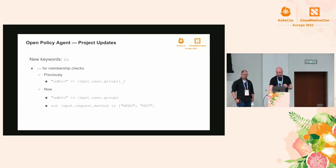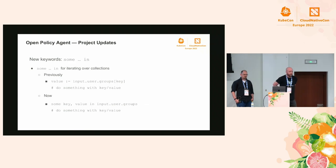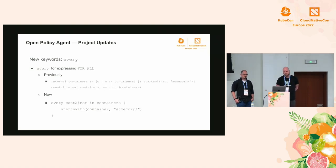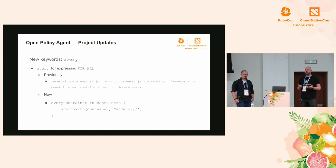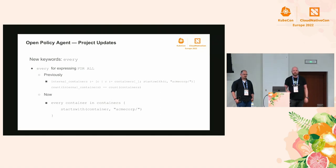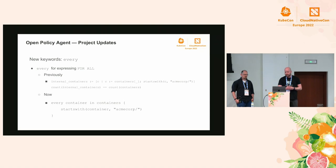There's also a 'some in' keyword, which is a new way to do iteration that might feel more familiar to users coming from other languages. And finally, there's the 'every' keyword, which is a new way of expressing 'for all.' This is very useful if you want to require, for example, that all containers in a deployment must come from the internal company registry. Previously this was clunky - you'd iterate over all containers, check for that specific value, and compare to the total count. Now you can just say: every container in containers starts with my internal company registry.